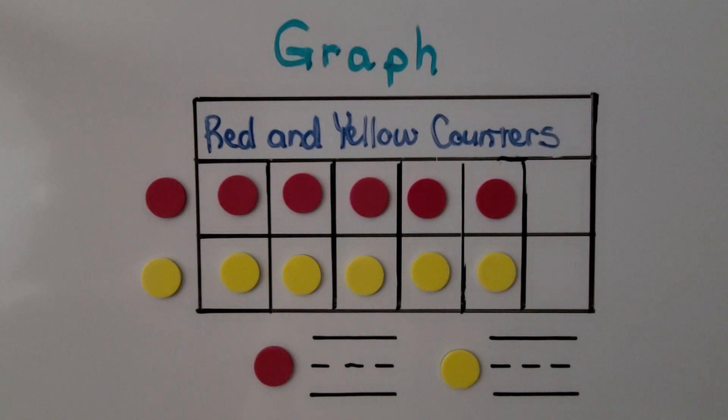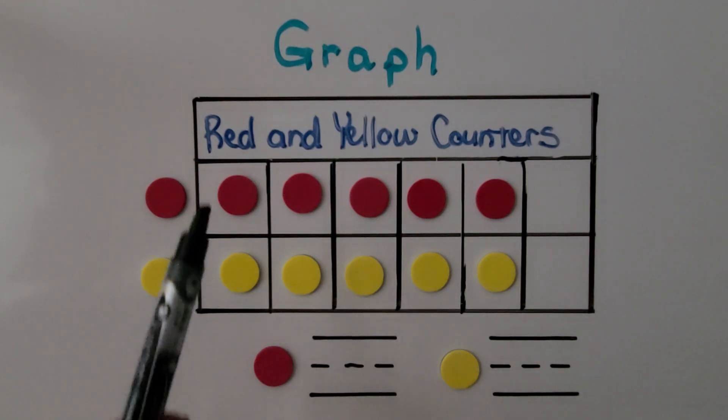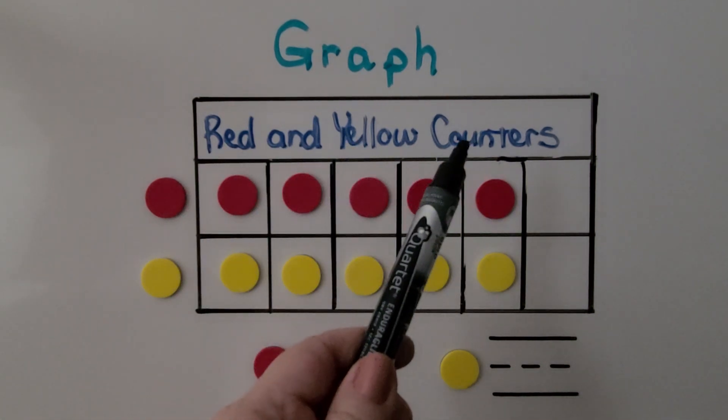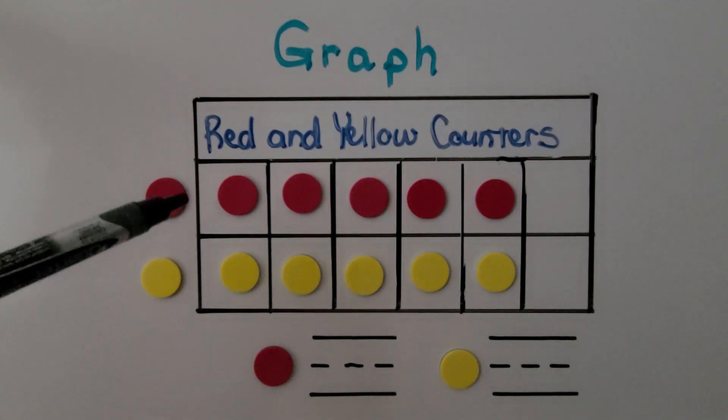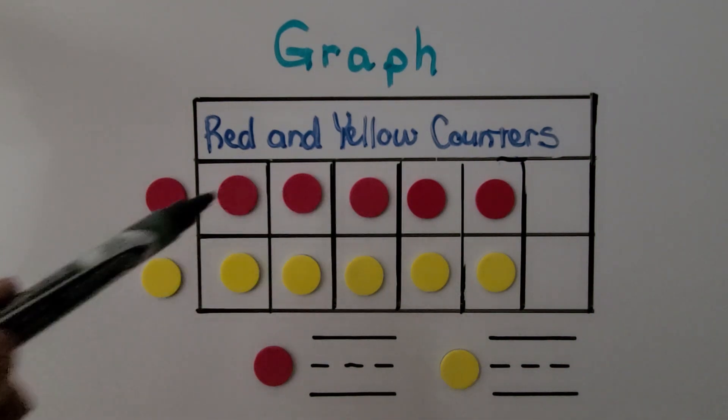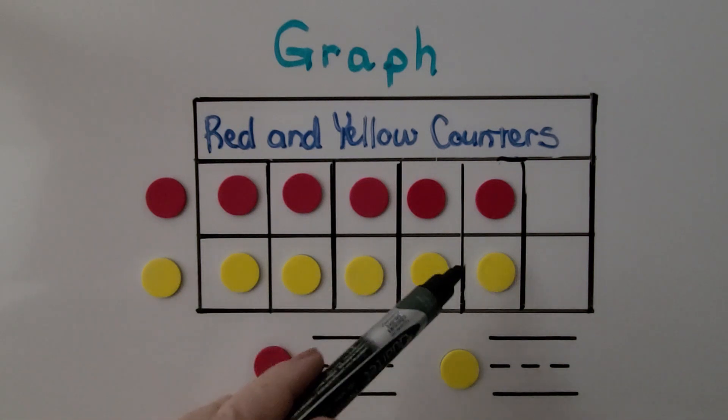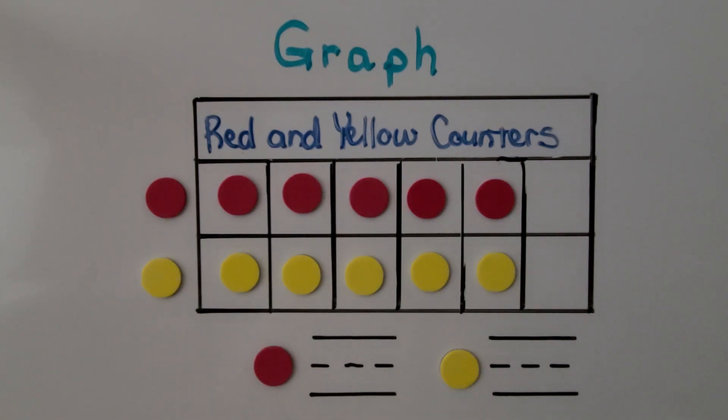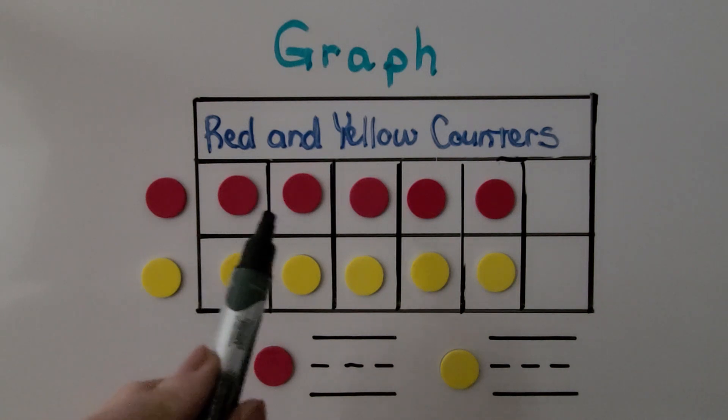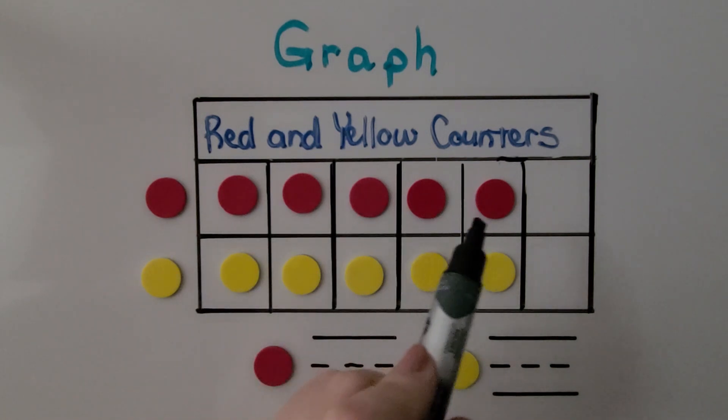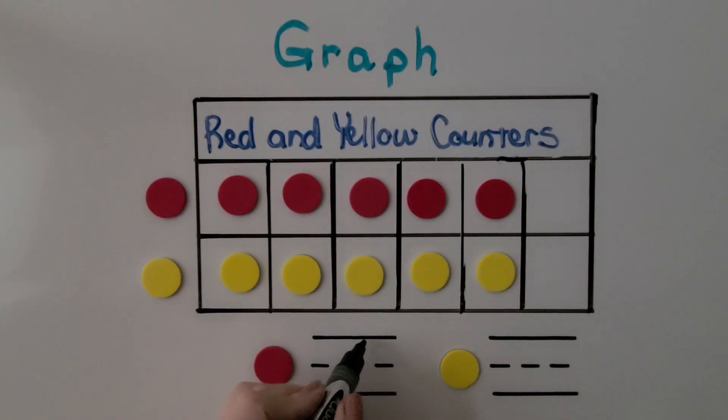Here we have a graph showing two categories, red and yellow counters. We see our picture labels. We have a red counter for the red row. We have a yellow counter for the yellow row. Here is the title. We can count them and write their numbers. For red, there's one, two, three, four, five. We can write five.